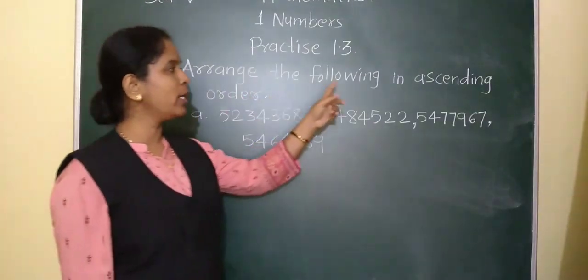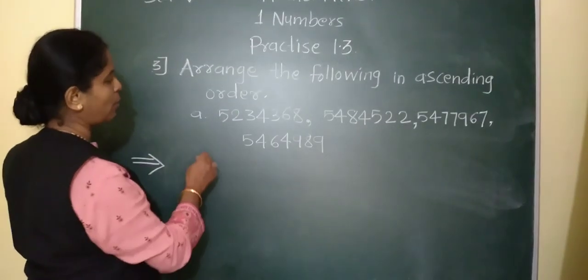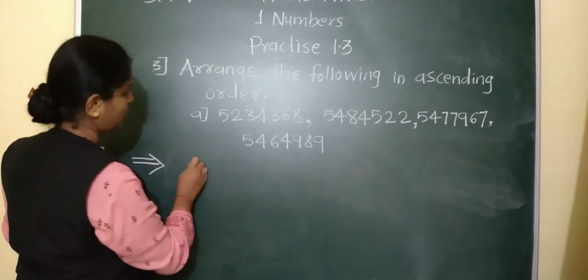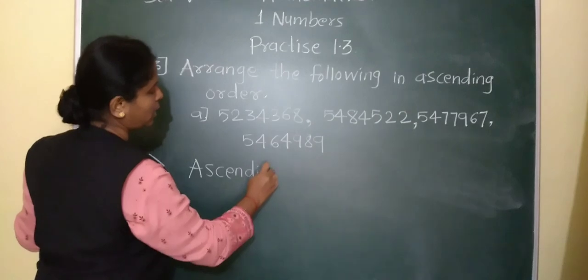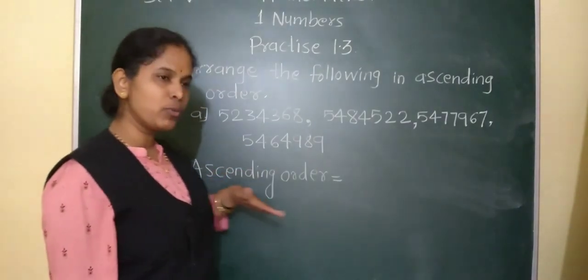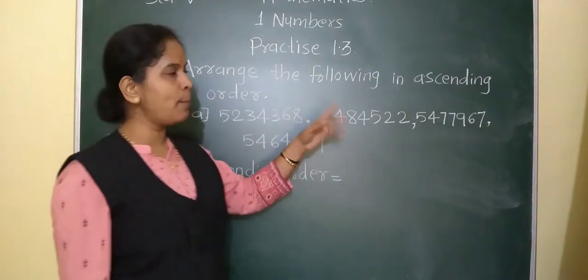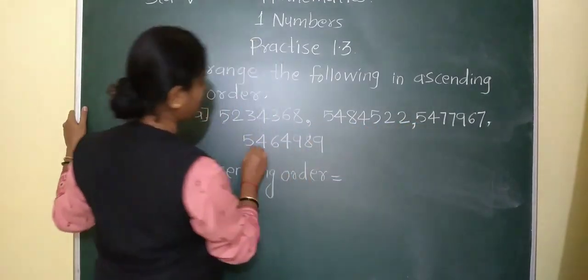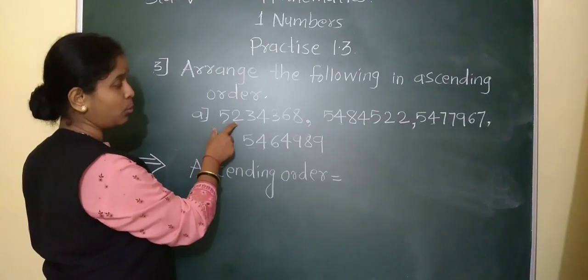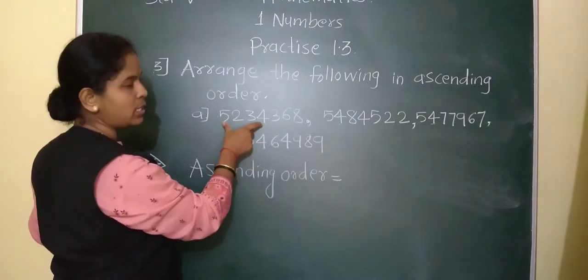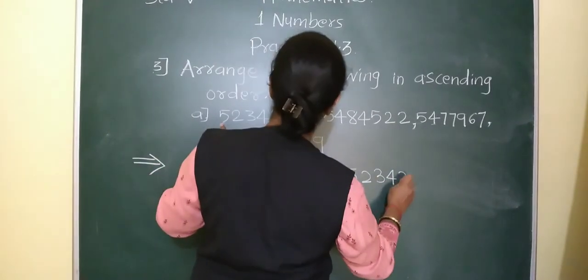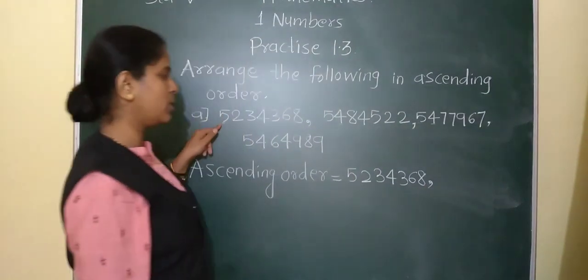Question 3: arrange the following numbers in ascending order. In ascending order, we write from smallest to biggest. We compare the first digits — all three numbers have 5 as the first digit. So we move to the second digit: here 2, here 4, here 4. Since 2 is smallest, that number is the smallest one and is written first.